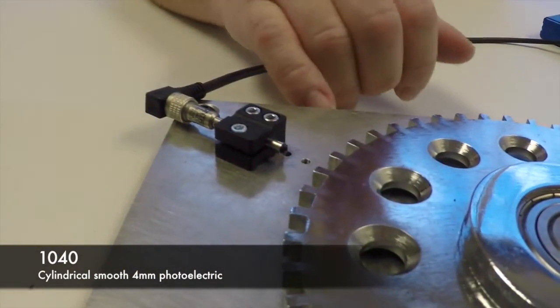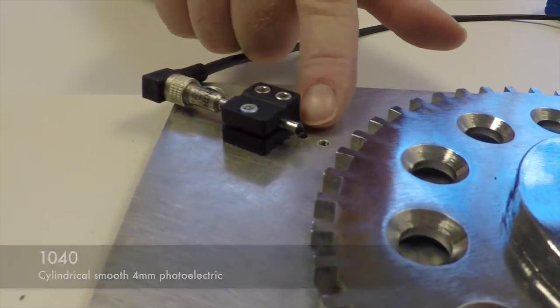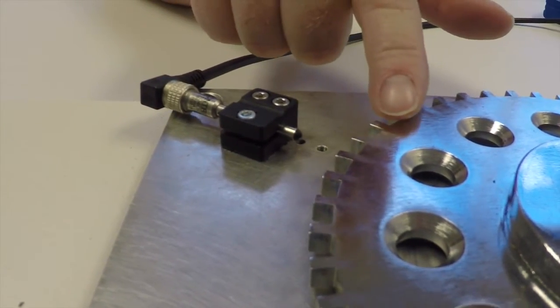I'm going to show you three sensors that can be used in an encoder application. Here's the 1040 diffuse. You'll notice the distance between the end of the sensor and the teeth.